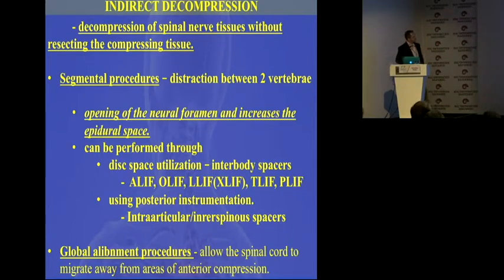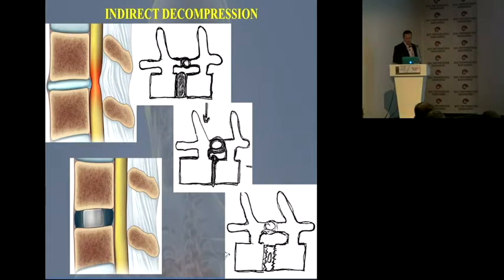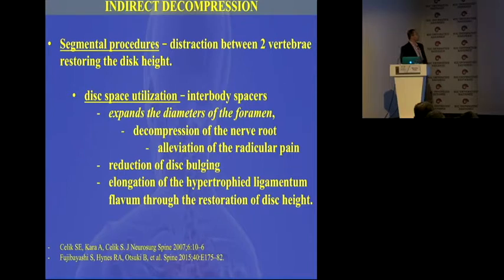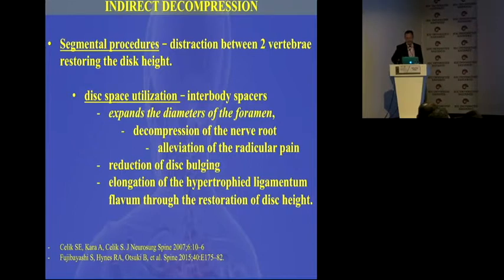Today's lecture will focus mainly on interbody procedures: ALIF, OLIF, LLIF, TLIF, PLIF — all lumbar interbody fusion procedures. This is the underlying idea. With normal degeneration, the disc collapses, the foramen closes, the ligamentum flavum buckles, and the PLL buckles — the foramen becomes smaller. With the introduction of a cage, you expand everything: you stretch the ligaments, remove the disc buckling, remove the ligamentum flavum buckling, and create space in the foramen. That is the main idea of indirect decompression — you create space by indirectly opening the foramen, without directly cutting the compressing tissues.